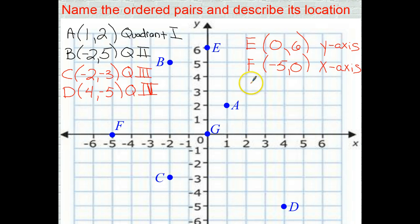Final one, G. G is right in the center of our number lines. We call that the origin. We call it 0, 0, and its location is the origin. So there is a quick review on how to plot points or find points on a coordinate plane and describe its location.